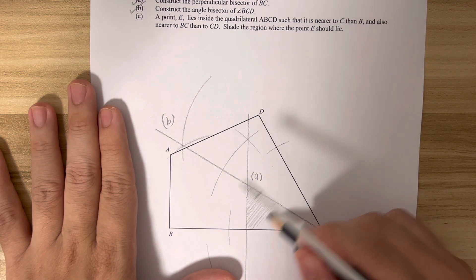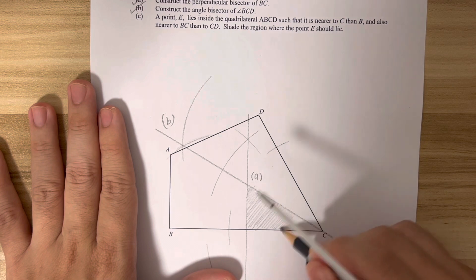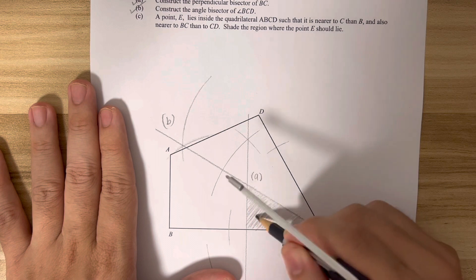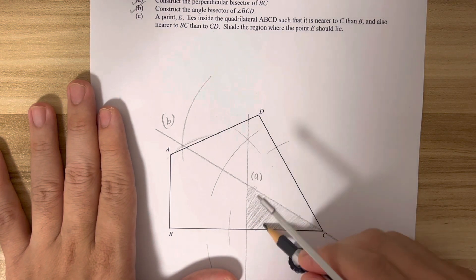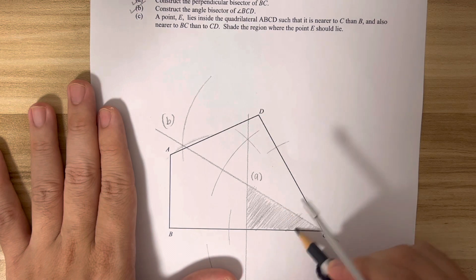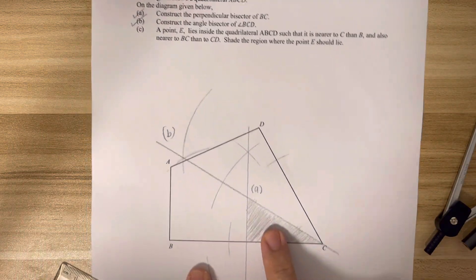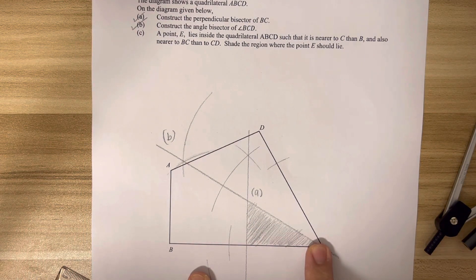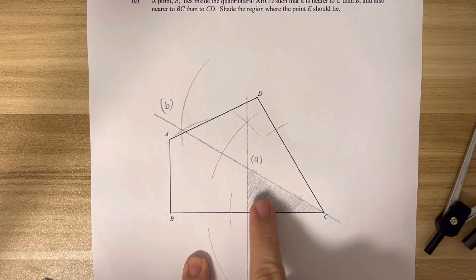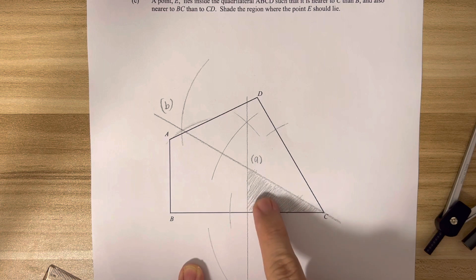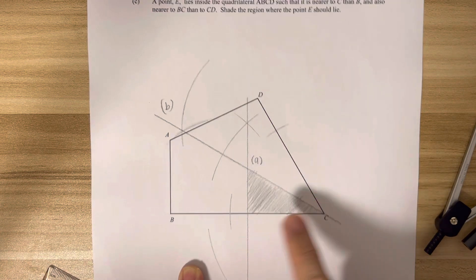Where E can be any point in this particular region here, so that it is nearer to C than B because of this dividing line, and it is nearer to the line BC compared to CD.